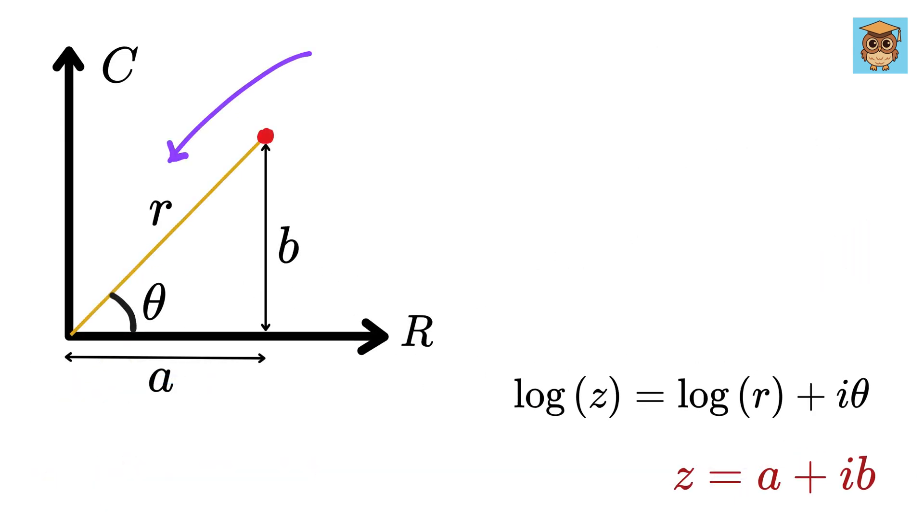Now, if you look here, r is the distance from origin to this point, which is denoted by the absolute value of z, which is the same as the typical distance between origin and this point, and theta is this angle.